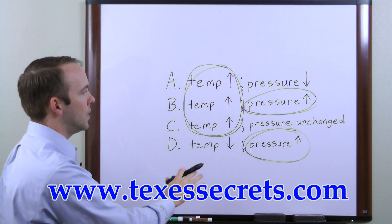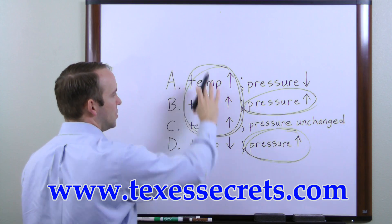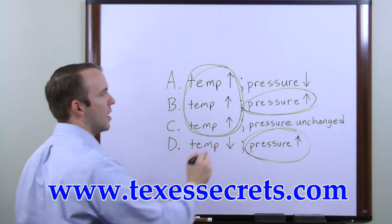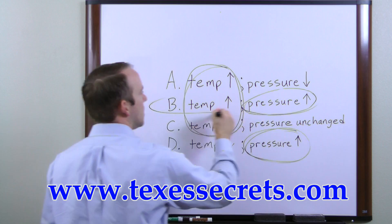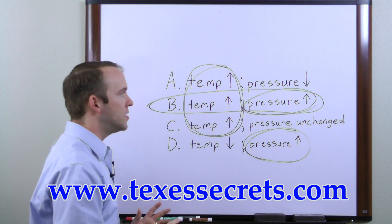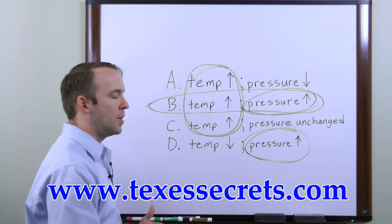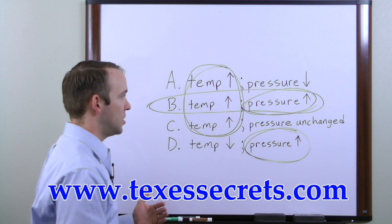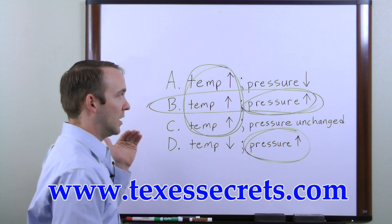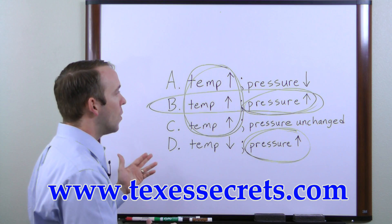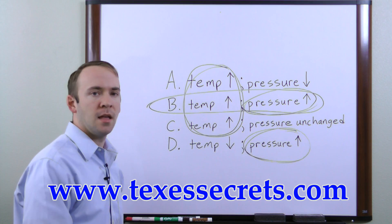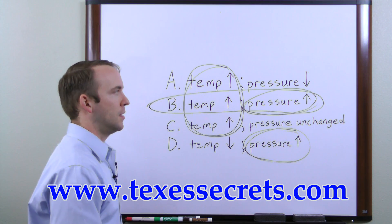So which answer choice combines the most popular selection for temperature with the most popular selection for pressure? The answer is going to be Choice B. If you have time to go through and understand the problem and make the correct selection, you don't have to resort to this. But it's a great way to do a gut check, or if you're trying to make an educated guess, it's an excellent method that more than likely will be correct.